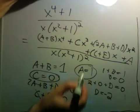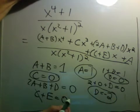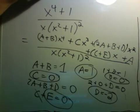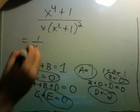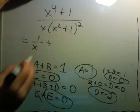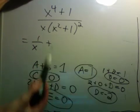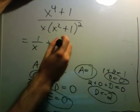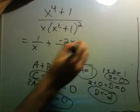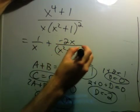So let's see, C is 0, A equals 1, B equals 0, D is negative 2, E is 0. That tells us this is 1 over x plus Bx plus C on top. Both B and C are 0, that term doesn't even appear. And then Dx plus E, we just have minus 2x over this term.